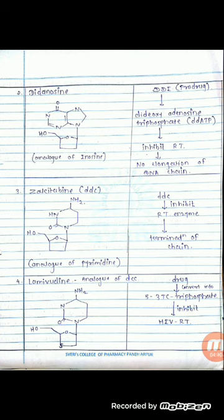The next drug is lamivudine, which is an analog of DDC. This is the structure of lamivudine. These drugs are converted into 5'-3TC triphosphate. These triphosphates inhibit the HIV reverse transcriptase enzyme.